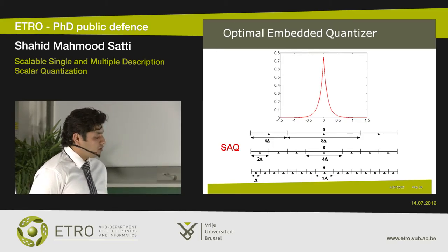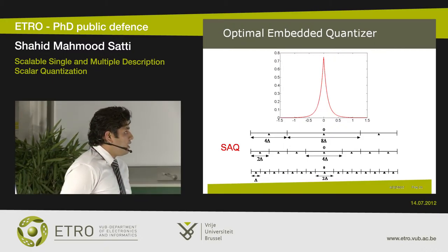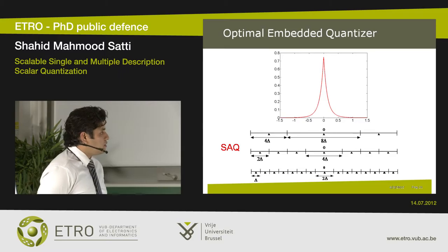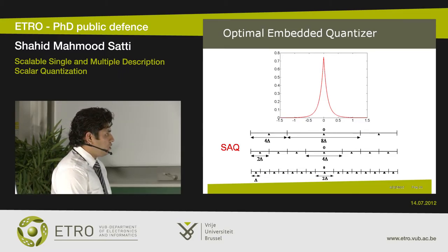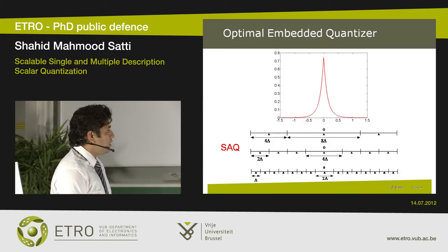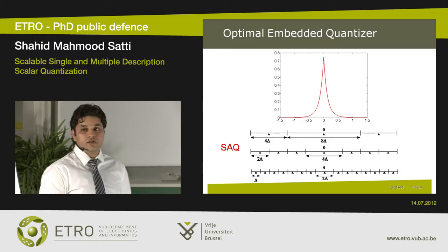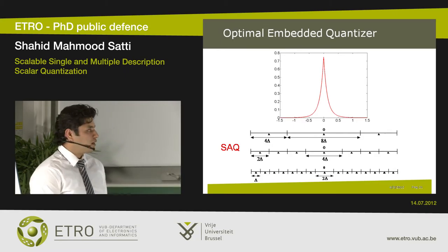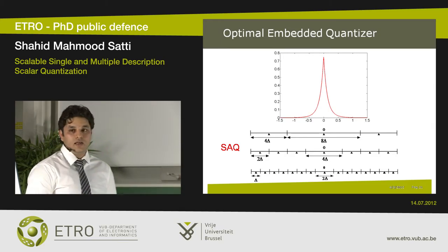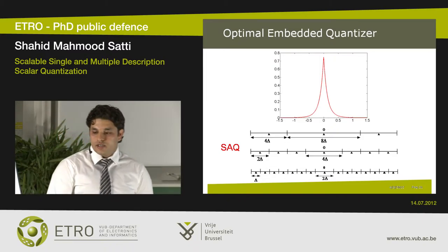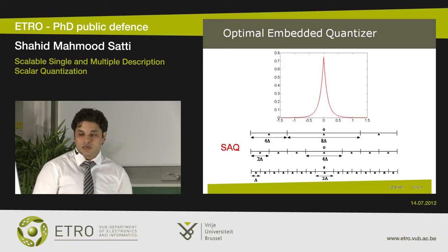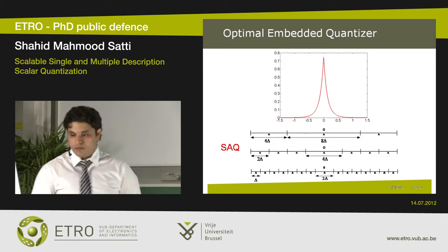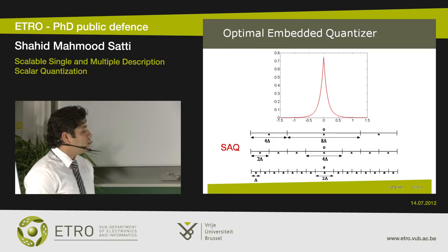We found that the optimal embedded quantization strategy should use equal-size bins — on one level, all bins are the same size, though size changes across levels. The exception is the central bin, called the dead zone bin, which is symmetrically distributed around the mean value and should be twice the size of the normal cells: 8-delta, while other cells have 4-delta size. This property should be kept constant throughout all embedded levels. In practice, such a quantization scheme is known as successive approximation quantization, which we use in our design of scalable compression systems.